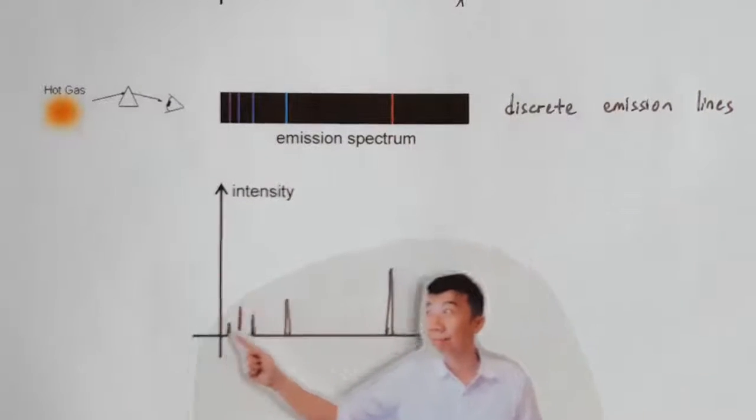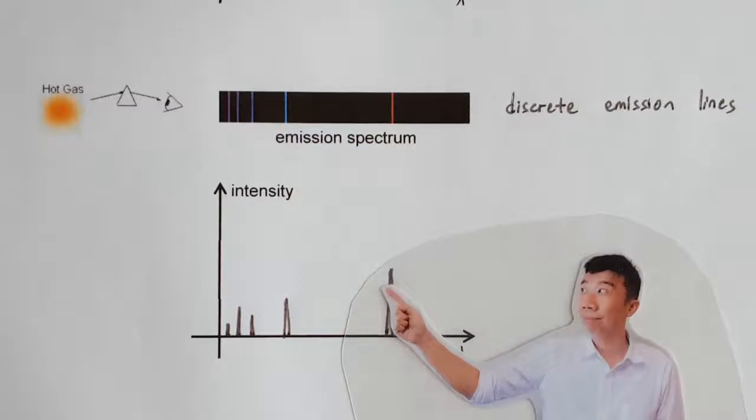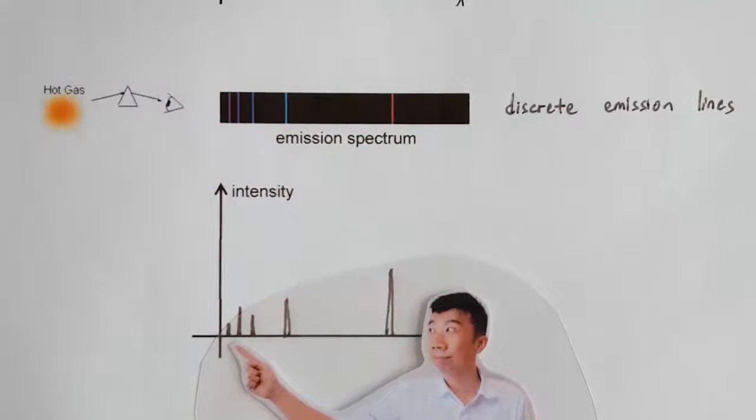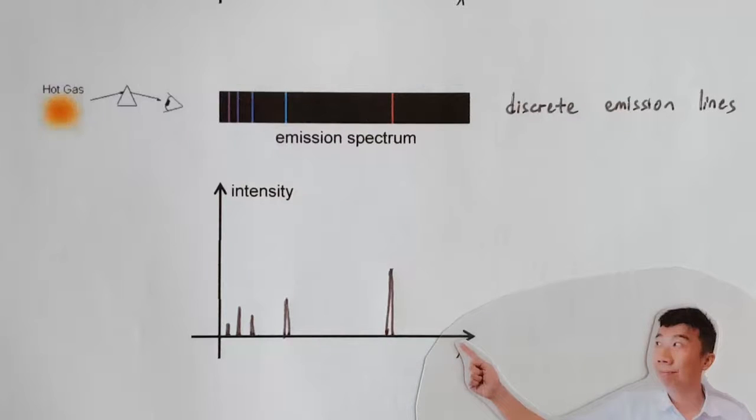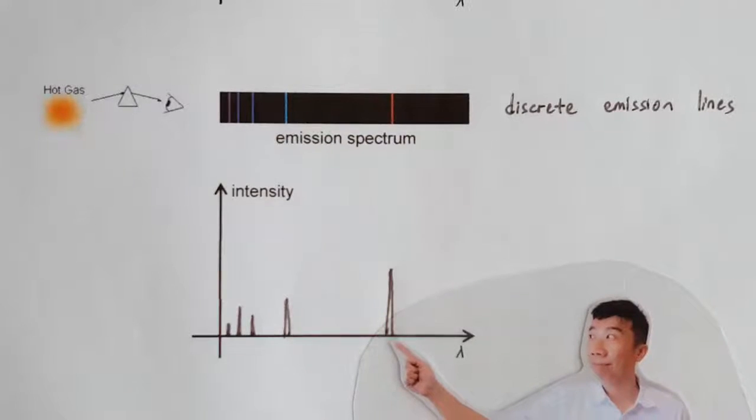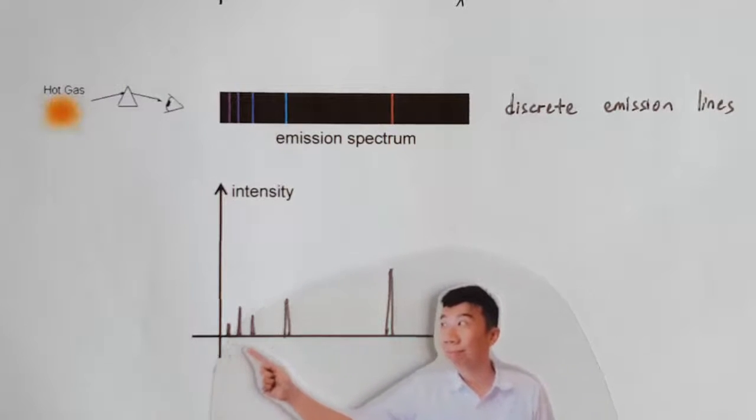Some emission lines are brighter than others, but the key point is, a hot gas does not emit light continuously across all the wavelengths. Instead, a hot gas emits light at very specific and disjointed wavelengths.